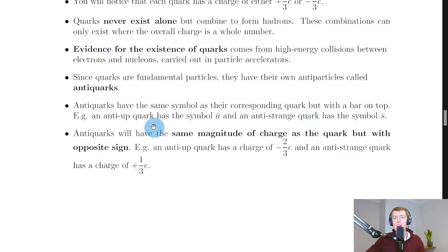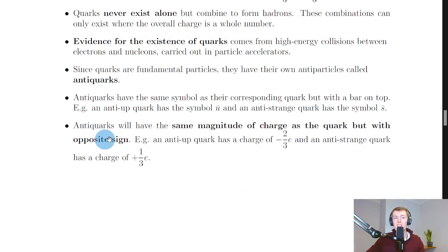Antiquarks have the same symbol as their corresponding quark but with a bar on top. For example, an anti-up quark has the symbol u with a bar above it, and an anti-strange quark has the symbol s with a bar above it (these are lowercase letters, remember). And lastly,